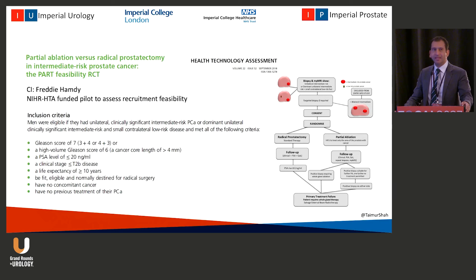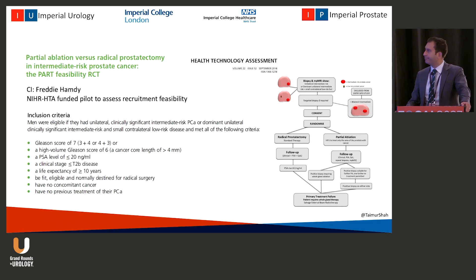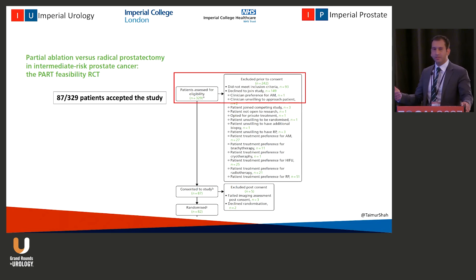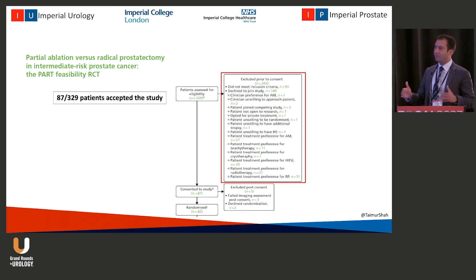The second is the PARTS study — another successfully completed feasibility study. They randomized 82 patients with intermediate-risk disease to either partial ablation with HIFU or radical prostatectomy, allowing repeat ablation, with primary outcome of treatment failure — proceeding to whole-gland treatment. They had to approach 329 patients to recruit 87. Most patients had already decided what they wanted and did not have equipoise for the randomization, which was one of the key issues with this sort of study.